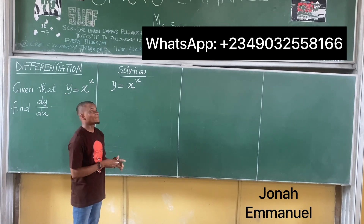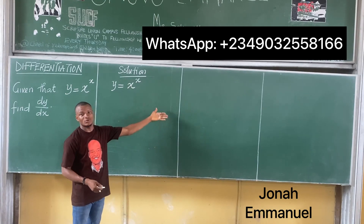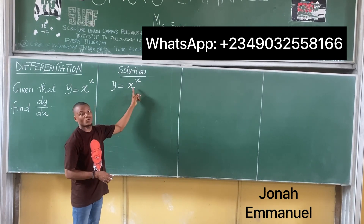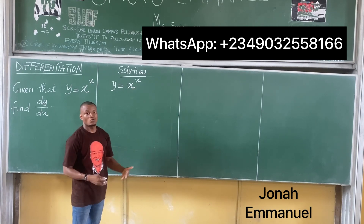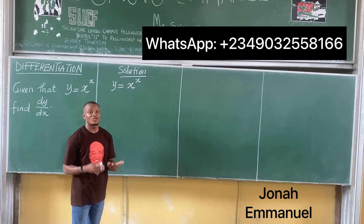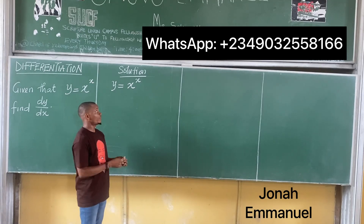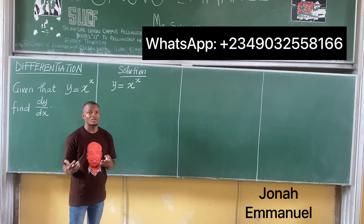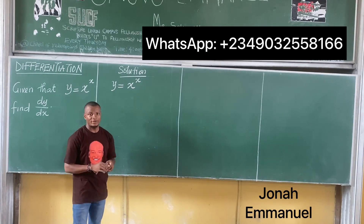So assuming this power were, say, 3, I would simply multiply by 3 and subtract 1. But for the fact that this power here is one of the variables — especially the variable with which we are differentiating with respect to, which is x — you can't just multiply by the power and subtract 1. It doesn't work here. So what do I do?